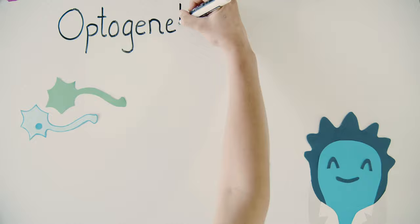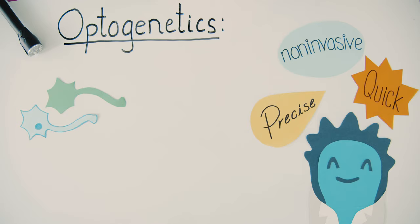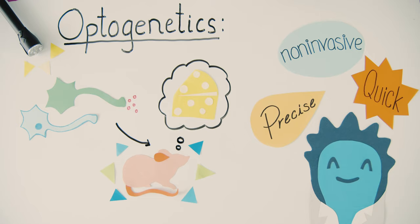Optogenetics is a non-invasive, quick, and precise method for manipulating neurons even within a living organism. With optogenetics, we can link specific neurons to behaviors and control brain activity. These tools could hold the key to uncovering the underlying systems behind brain function and neurological disease.